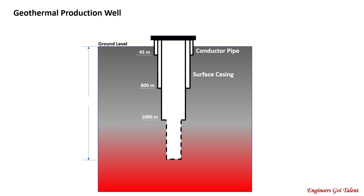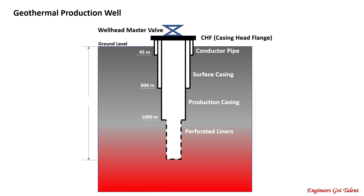The surface casing also provides structural strength for the succeeding casings to be installed. Setting depths could vary about 800 meters. Next is the production casing, which is run and cemented and is set right on top of the producing zones. It isolates troublesome formations or fluids from getting into the well, with setting depths varying around 1000 meters. Next are the perforated liners, which are carbon steel pipes with hollow or slotted holes punched on them. They are hung at the end of the production casing, do not extend to the surface, and are slotted for geothermal fluids to pass through. Once the casings and liners are installed, the CHF or casing head flange is welded on top of the casings and the master valve is installed to open and close the well. The depth of the well is around 1200 meters.